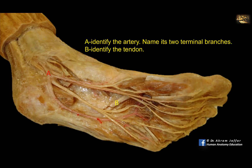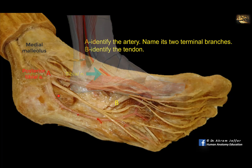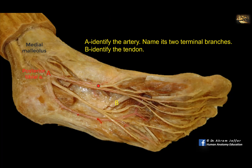Identify artery A, name its two terminal branches, and identify tendon B. The artery is located on the medial side of the ankle joint, behind the medial malleolus. This is the posterior tibial artery, and both the artery and the tibial nerve are splitting here into the medial plantar artery and lateral plantar artery, and medial plantar nerve and lateral plantar nerve.